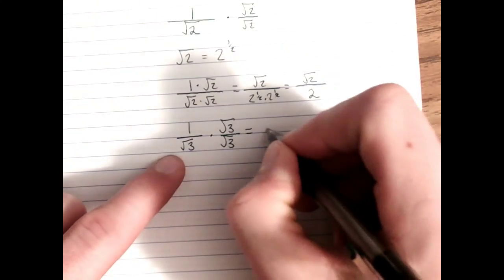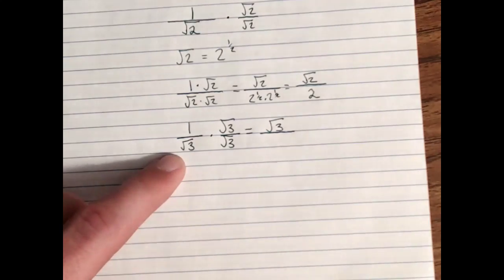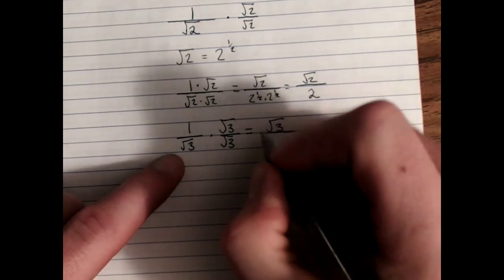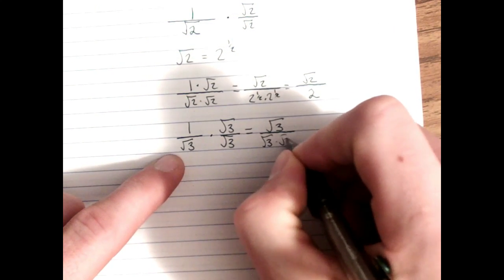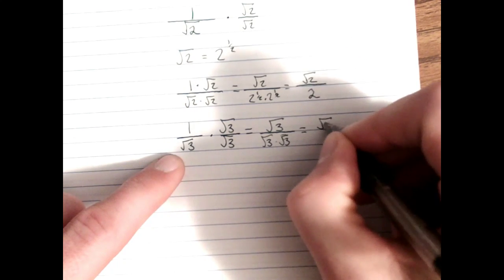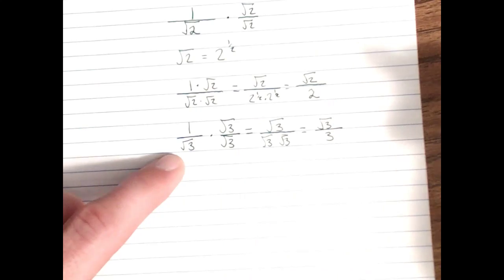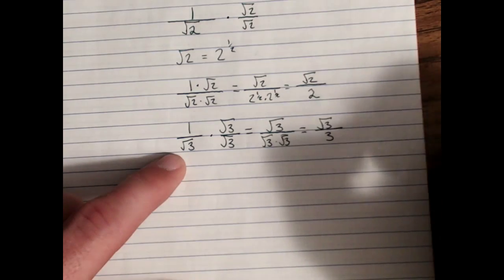Root 3 times root 3 is the same as root 3 squared, which simplifies to 3 without the root at all. Root 3 over 3.